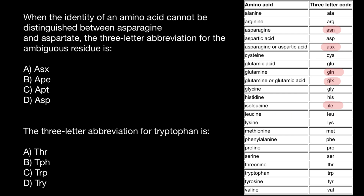Next in the table are leucine, lysine, methionine, phenylalanine, proline, serine, and threonine — all straightforward first-three-letter abbreviations. But then comes tryptophan. You might expect TRY, but the abbreviation is TRP. Why? Because the name essentially consists of two parts: trypta and phan. The first two letters TR come from the first part, and P comes from phan. So it's TRP, not TRY.